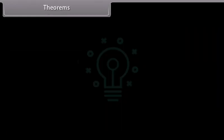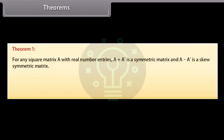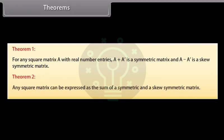Theorems. For any square matrix A with real number entries, A plus A' is a symmetric matrix and A minus A' is a skew-symmetric matrix. Any square matrix can be expressed as the sum of a symmetric and a skew-symmetric matrix.